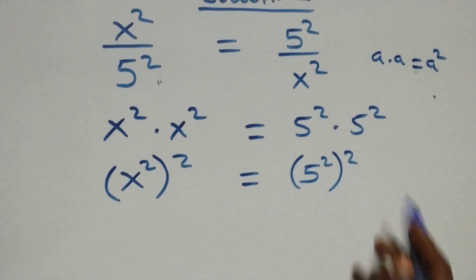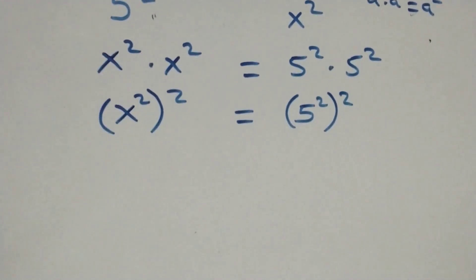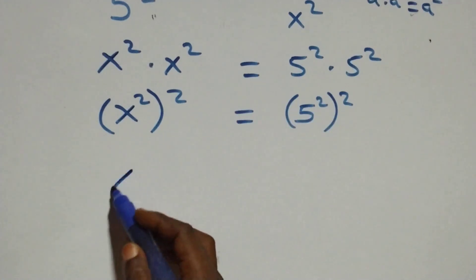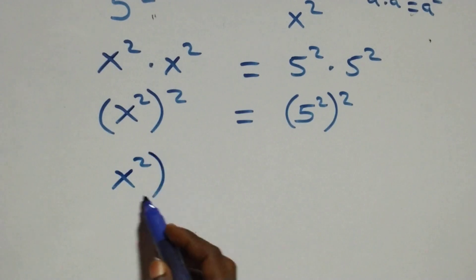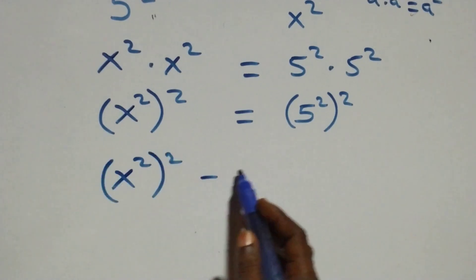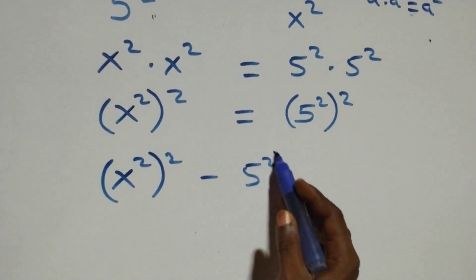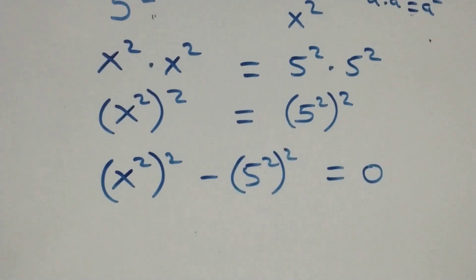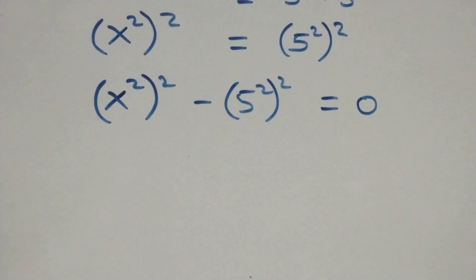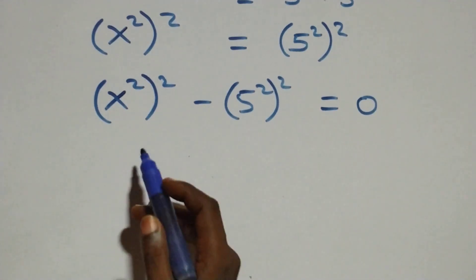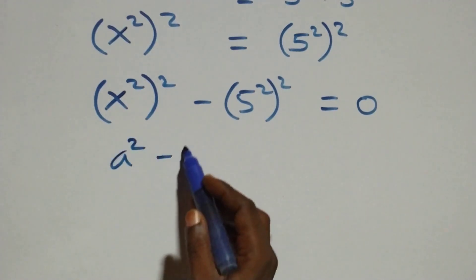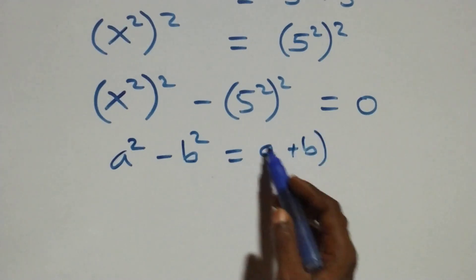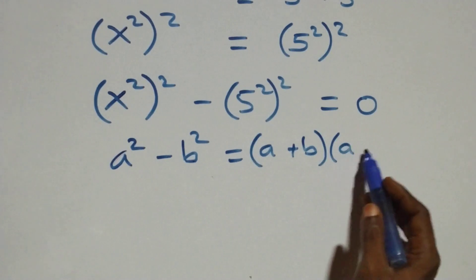Next, we take 5 squared all squared to the left hand side, giving us x squared all squared minus 5 squared all squared equals zero. This follows the difference of two squares: a squared minus b squared equals (a + b)(a - b).